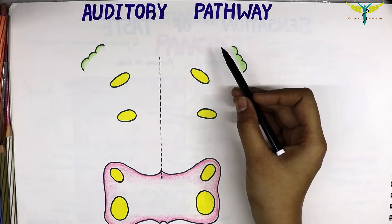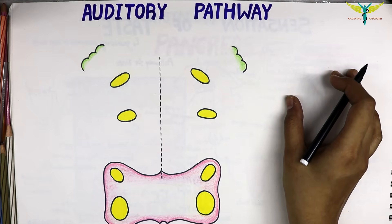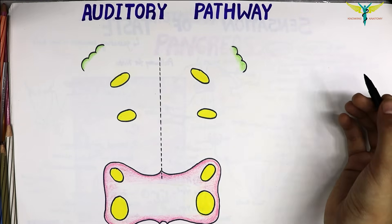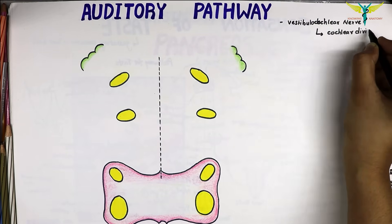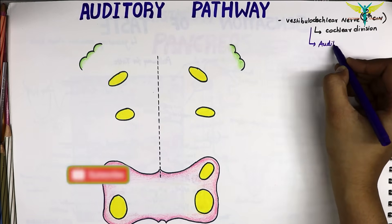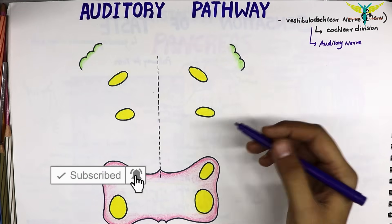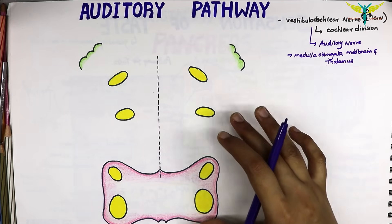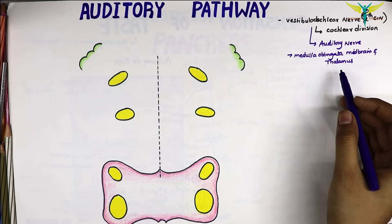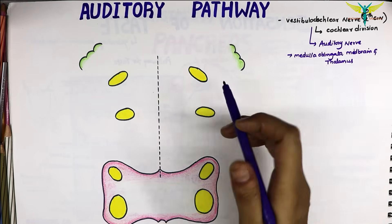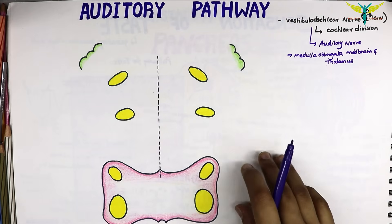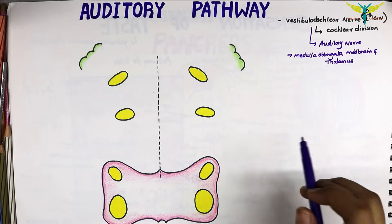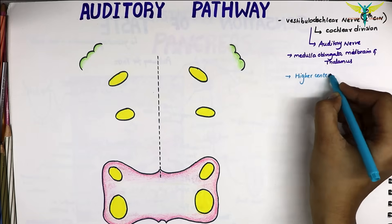In this video, let's learn about the auditory pathway. The fibers of the auditory pathway pass through the cochlear division of the vestibulocochlear nerve, that is the eighth cranial nerve, also called the auditory nerve. The major part of the auditory pathway lies in the medulla oblongata, midbrain, and the thalamic region. The higher center of the auditory pathway is present in the temporal lobe of the cerebral cortex, where the fibers finally terminate. These fibers are both crossed and uncrossed, so that each cochlea is represented in the cortex on both sides.